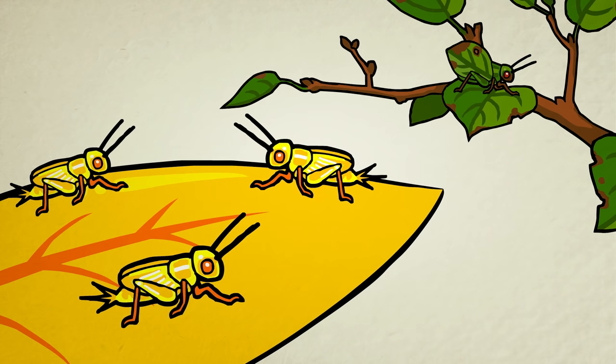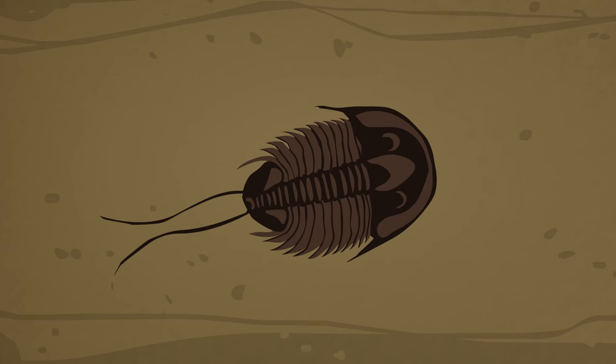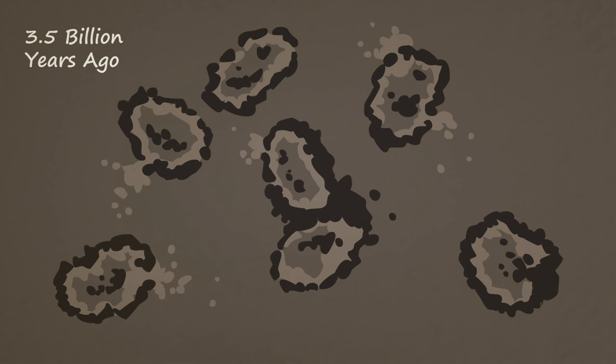A careful look at the fossil record overwhelmingly confirms Darwin's theory. Life forms get simpler and simpler as we go back in time. The record suggests that all life on earth emerged from primitive cellular colonies, which first appeared roughly three and a half billion years ago. But how did those first reproducing creatures come about?